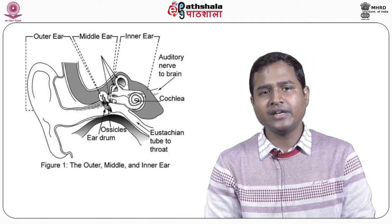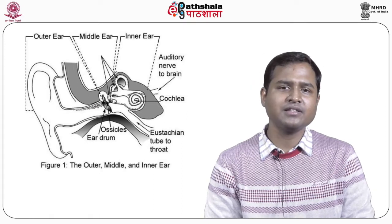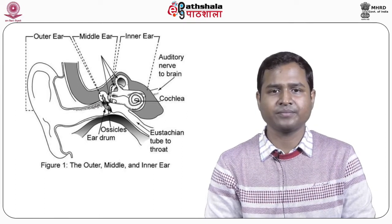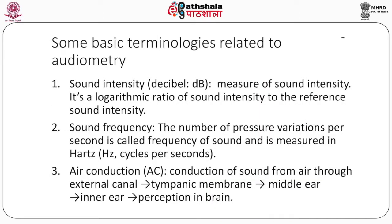Before going into details of the audiometer, I would like to explain some common terms. First, sound intensity, denoted in decibel or dB. It is the measure of sound intensity — a logarithmic ratio of sound intensity to a reference sound intensity, which is the minimum intensity audible sound for humans. Zero decibels is the minimum audible sound by the human ear. The range of sound of the human ear is about 0 to 140 decibel, and a typical conversation occurs at around 60 decibel.